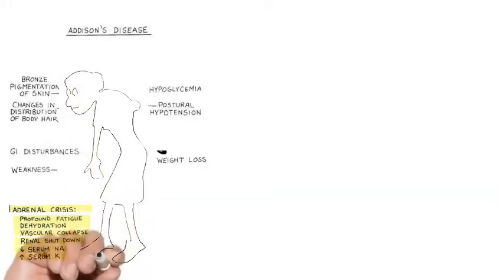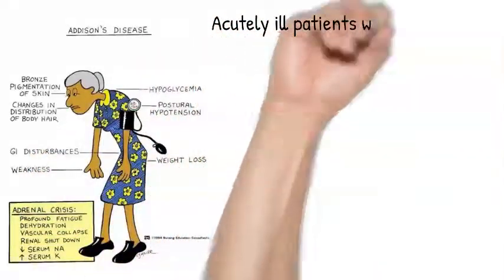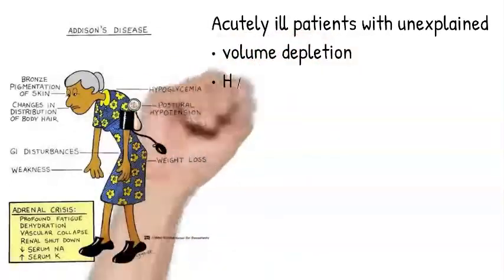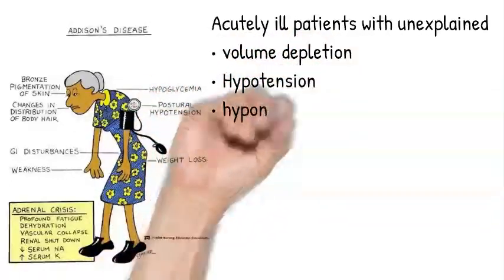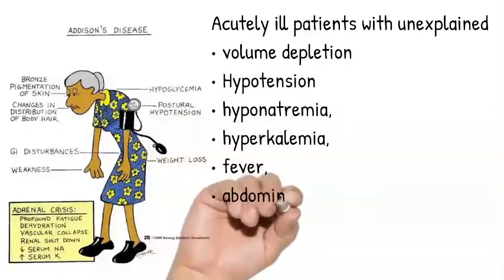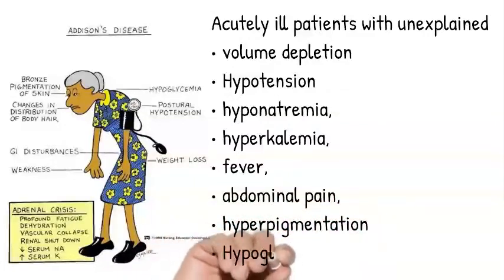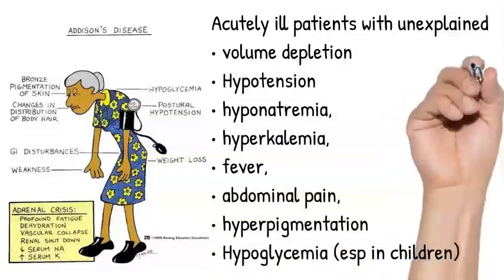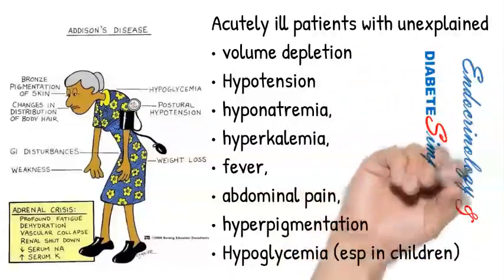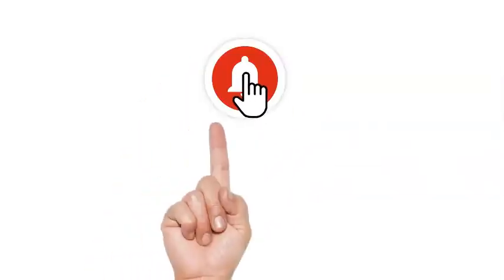The Endocrine Society advises that if you have an acutely ill patient with unexplained volume depletion or dehydration, postural drop, hypotension, hyponatremia or hyperkalemia, fever, abdominal pain, or pigmentation of their skin, or unexplained hypoglycemia — especially in children — think about Addison's disease as it might be contributing to their symptoms. So do test them for Addison's disease.